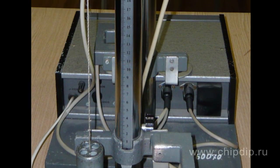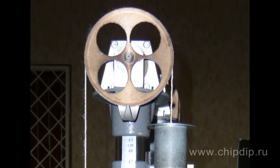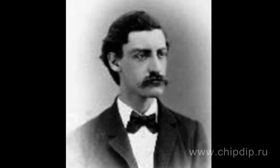The Atwood machine is a device for studying progressive motion and verifying mechanical laws of motion with constant acceleration. The device was invented in 1784 by George Atwood, a professor of mechanics at Cambridge.